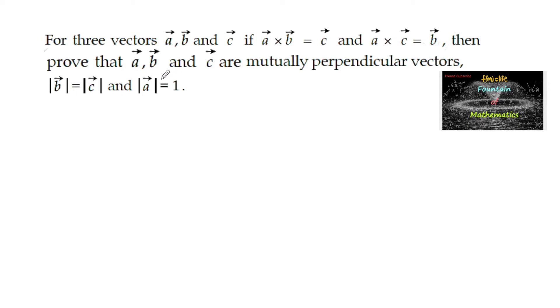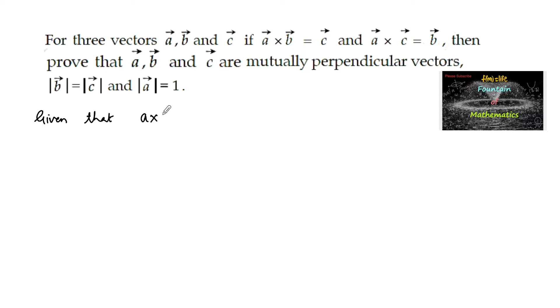For three vectors a, b, and c, if a cross b is equal to c and a cross c is equal to b, then prove that a, b, and c are mutually perpendicular vectors, mod b is equal to mod c, and mod a is equal to 1. Given that a cross b is equal to c.